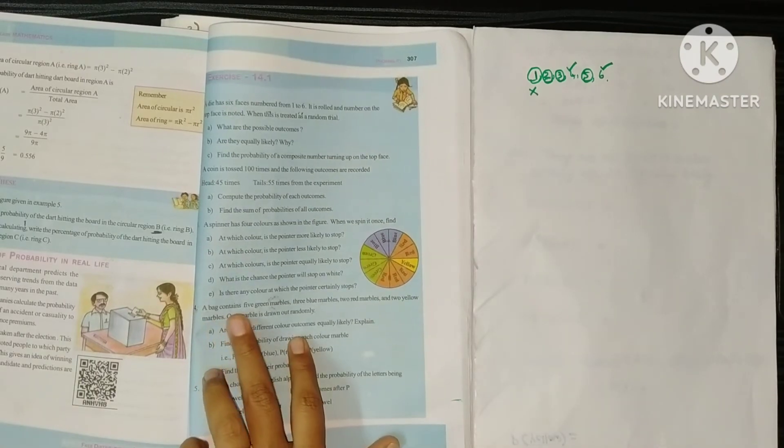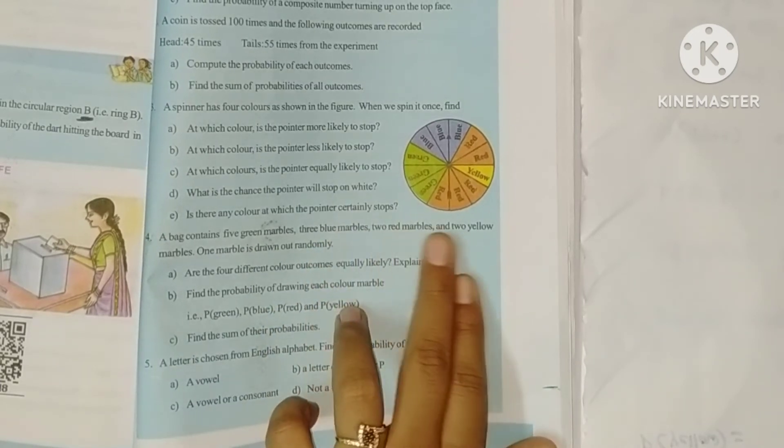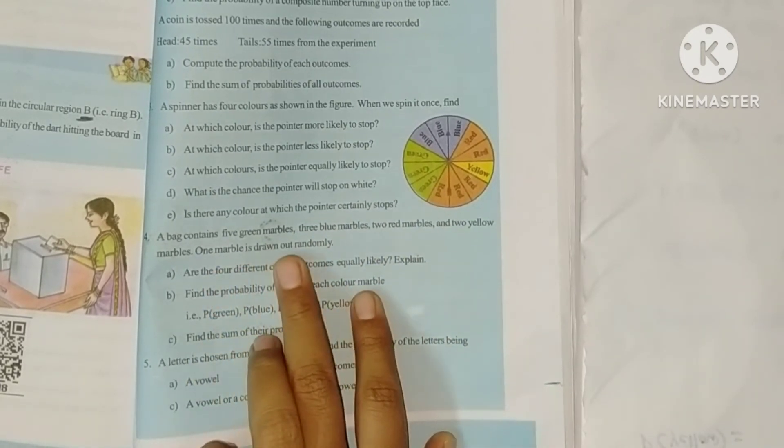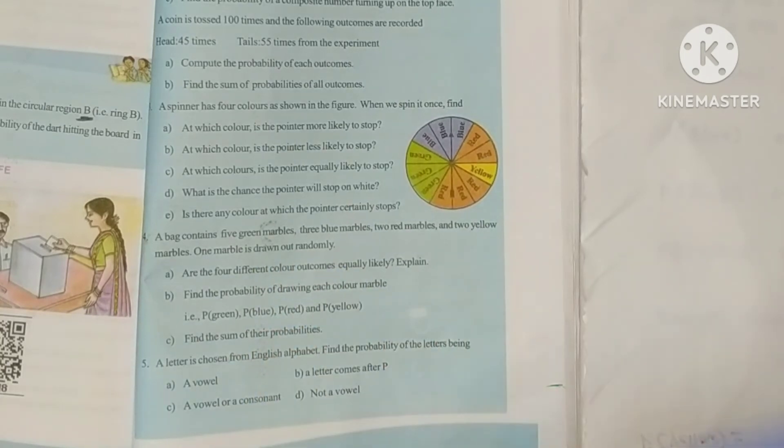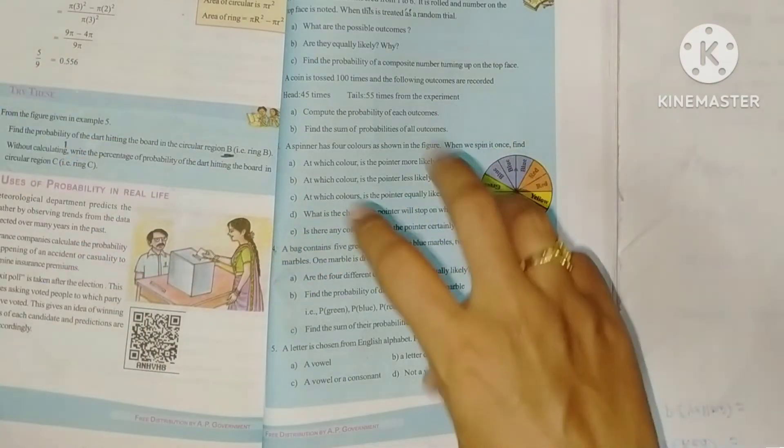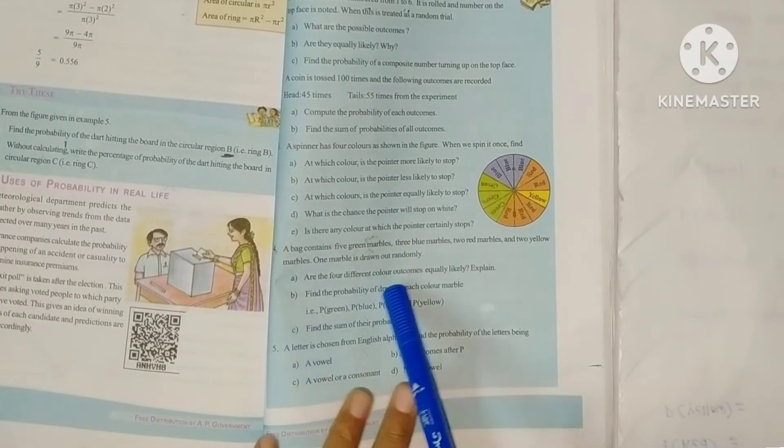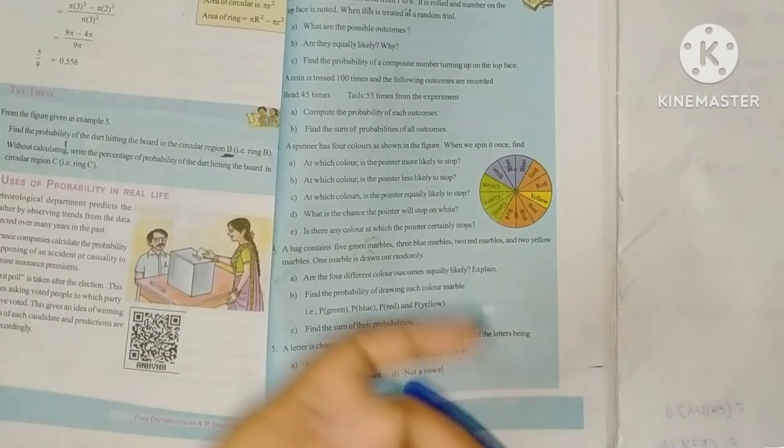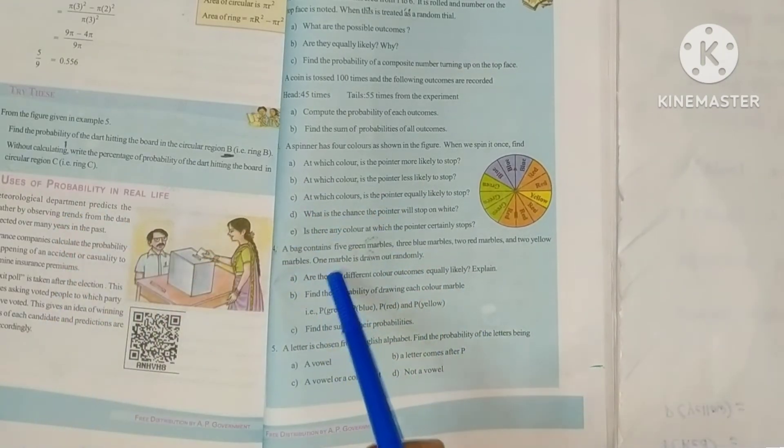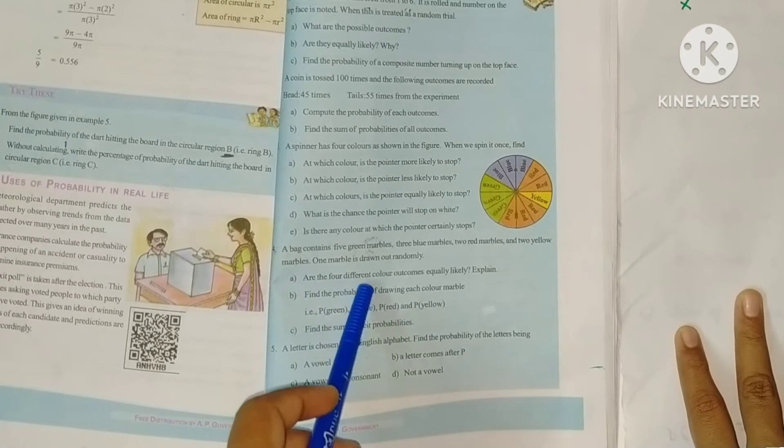Fourth one: A bag contains five green marbles, three blue marbles, two red marbles, and two yellow marbles. One marble is drawn out randomly. Are the four different color outcomes equally likely? No. Number of green marbles 5, blue 3, red 2, yellow 2, and total number of marbles, we add them: 5 plus 3, 8, 10, and 12.